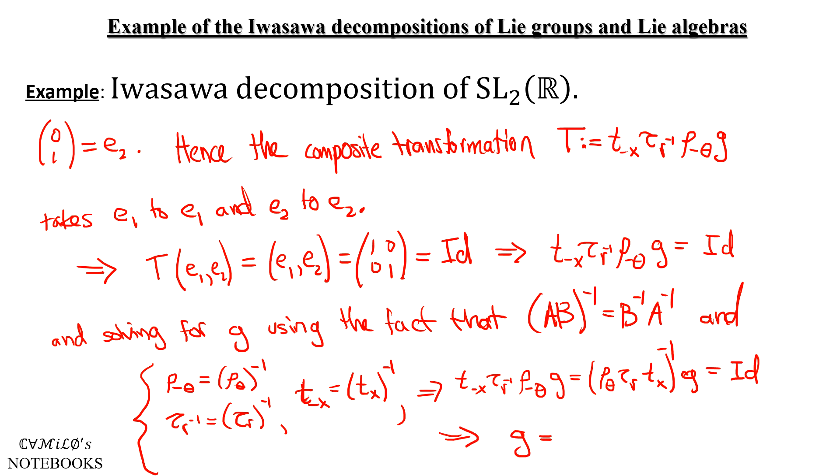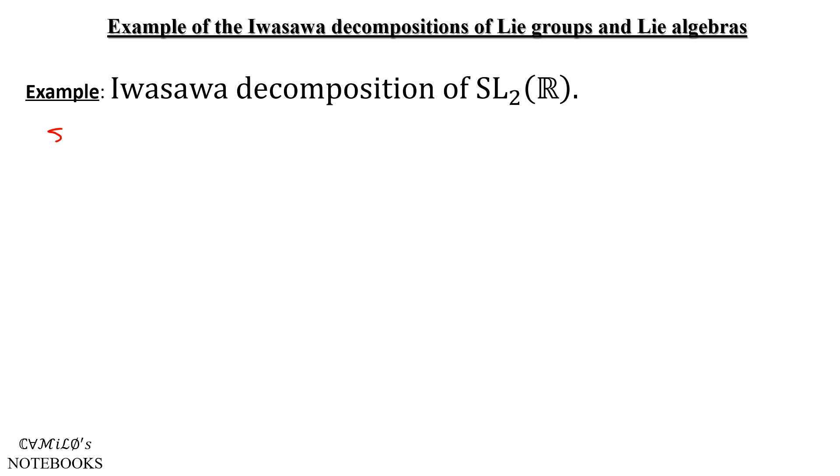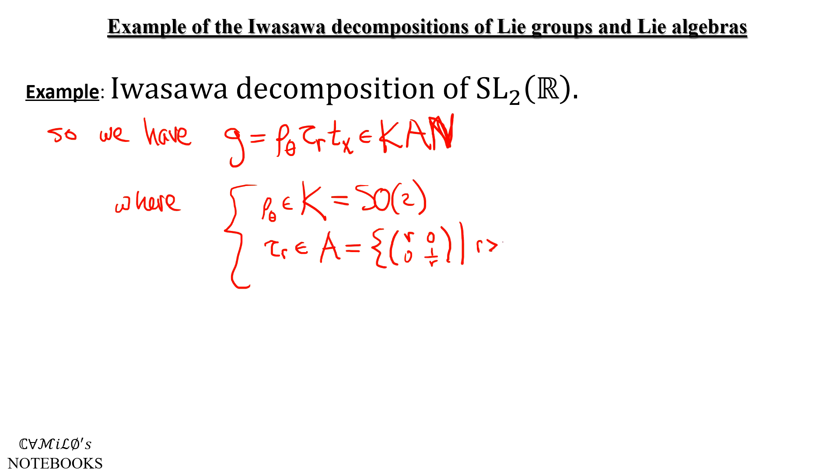Hence, G is exactly ρ_θ τ_R T_X. So now we've seen that every element of G is, in fact, of this form where K again is our maximal compact subgroup, in our case, SO(2). τ is our maximal abelian group of these types of matrices, and this is isomorphic to the positive real numbers, and even isomorphic to the real numbers. And T_X will be this nilpotent matrix, which is, of course, just isomorphic to ℝ, with the obvious isomorphism.